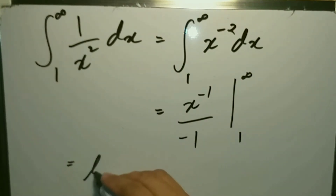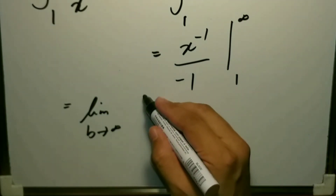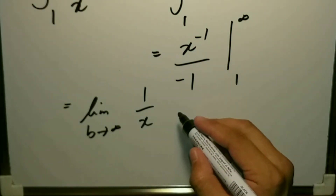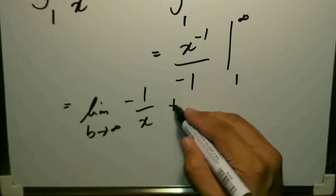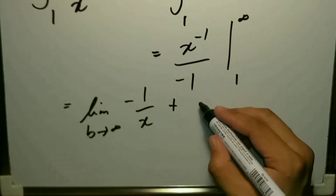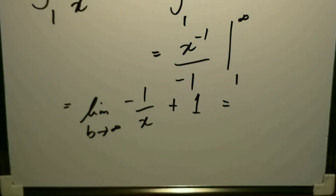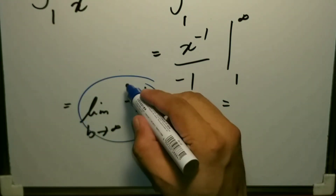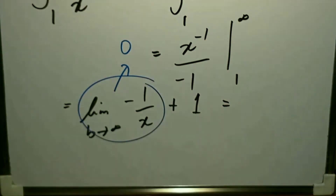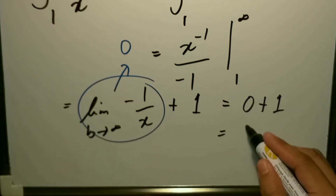We have the limit as b approaches infinity of −1/x evaluated from 1 to b, which gives −1/b + 1. As b approaches infinity, −1/b goes to 0, so we have 0 + 1, which equals 1.